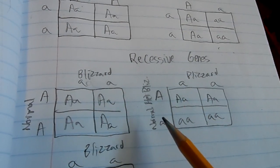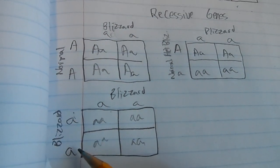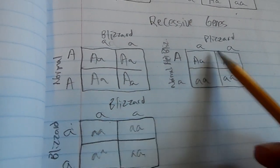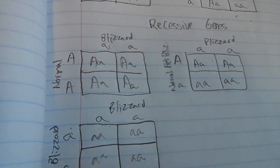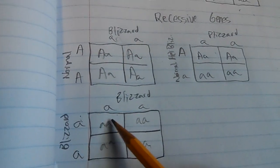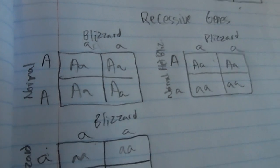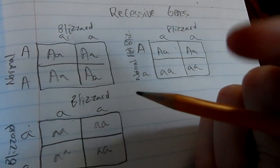But if you have a het, you'll get either 50% the recessive gene or 100%. So there's a lot of recessive genes out there.